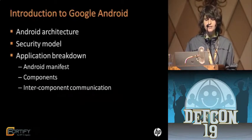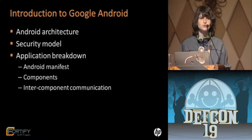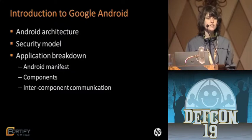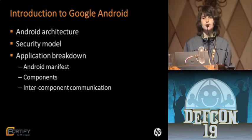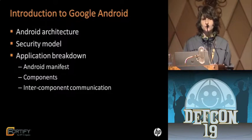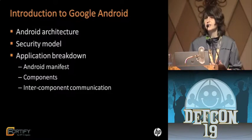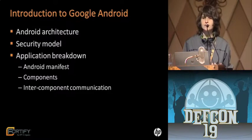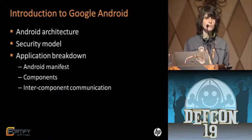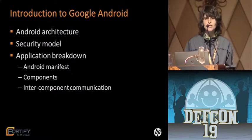In terms of the introduction to Google Android, we're going to discuss architecture, security model, and application breakdown — basically the Android manifest, which is a configuration file that comes with every Android application, the components of an Android application, and also inter-component communication.